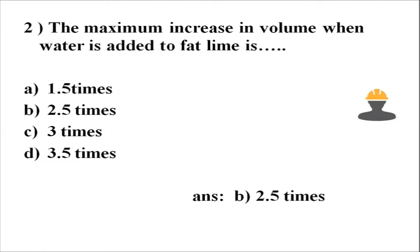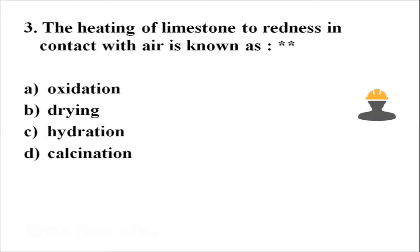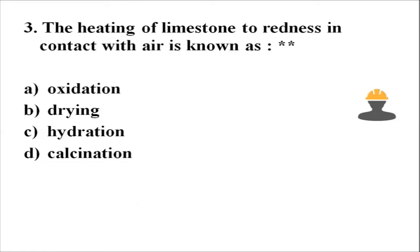Another question: The heating of limestone in contact with air is known as — Option A, oxidation; Option B, drying; Option C, hydration; Option D, calcination. Limestone undergoes calcination, which involves the removal of carbon dioxide through a chemical reaction.